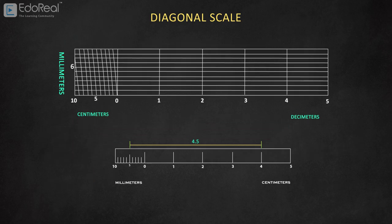As the diagonal scale contains two subunits, it can measure up to two decimal values, for example, 4.56. Let's see how to construct a diagonal scale for the following problem.